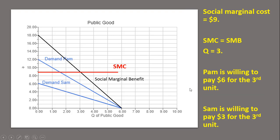The next thing we can do is find the efficient provision of the public good. Let's assume that the marginal cost of providing this public good is $9. So a horizontal line at $9 represents the marginal cost, or social marginal cost. The efficient provision occurs where the social marginal benefit equals the social marginal cost — at this intersection.